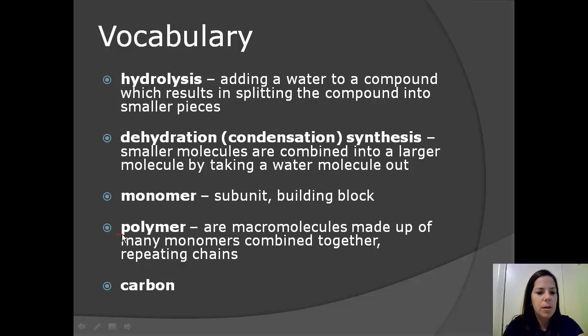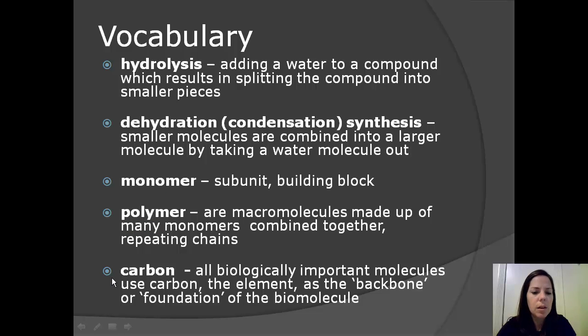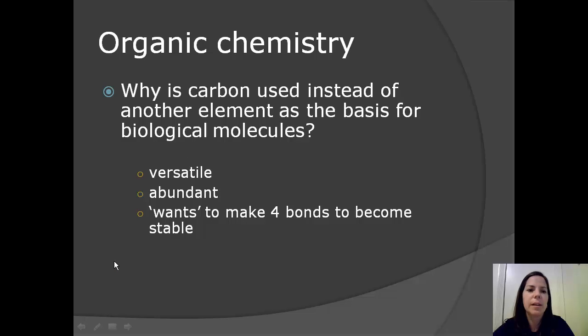Polymer. Poly refers to many. Polymers are macromolecules made up of many monomers combined together to create repeating chains. For example, glucose and glucose combine together to form glycogen. And finally, carbon. All biologically important molecules use carbon, the element, as the backbone or foundation of the biomolecule. Okay, let's get started.